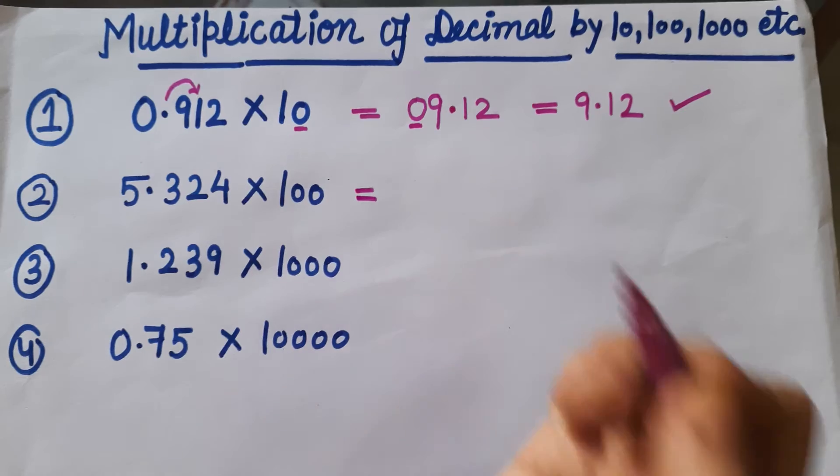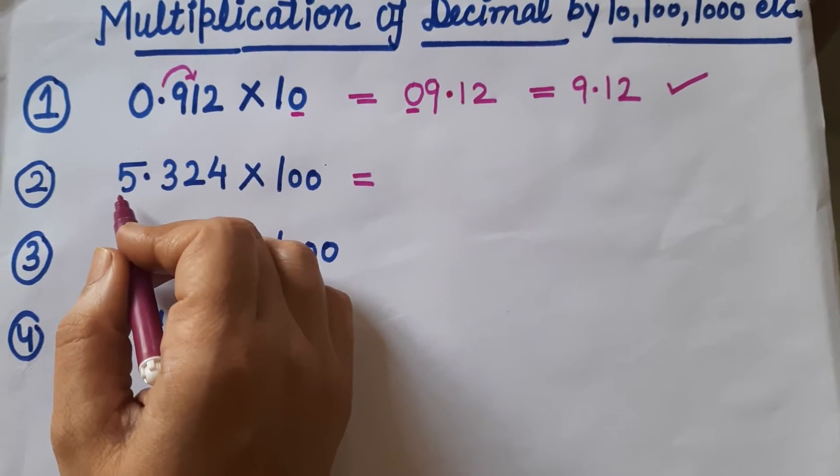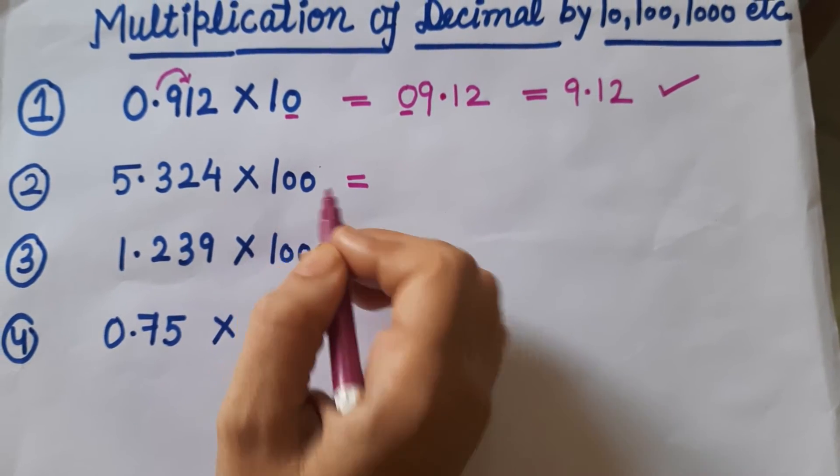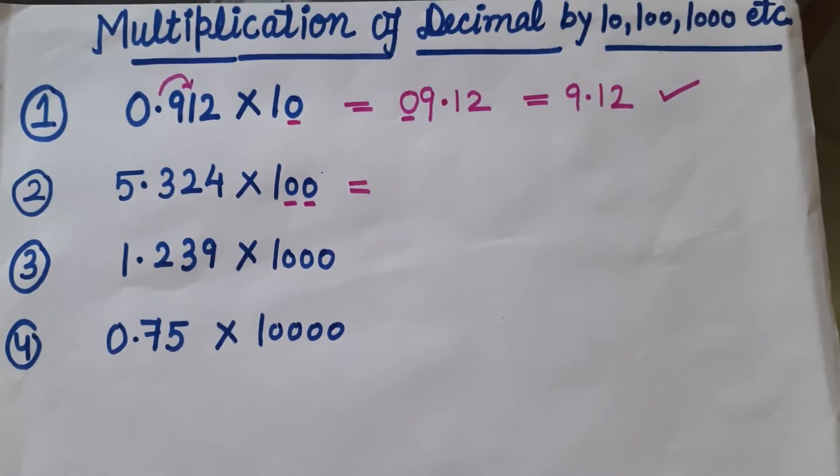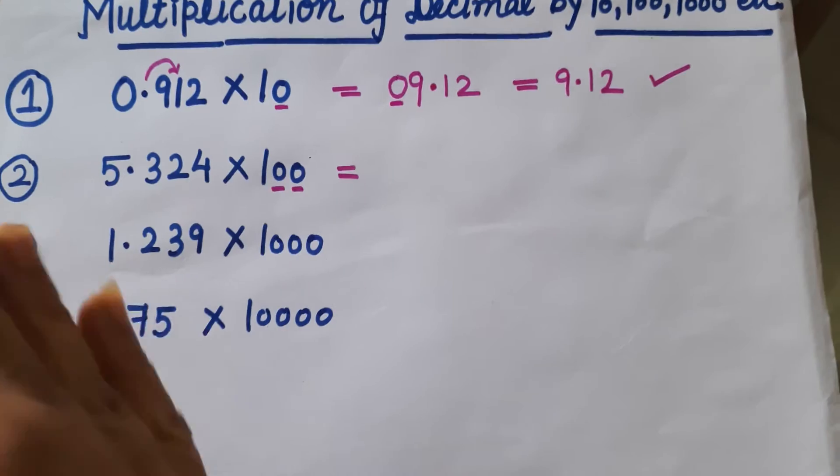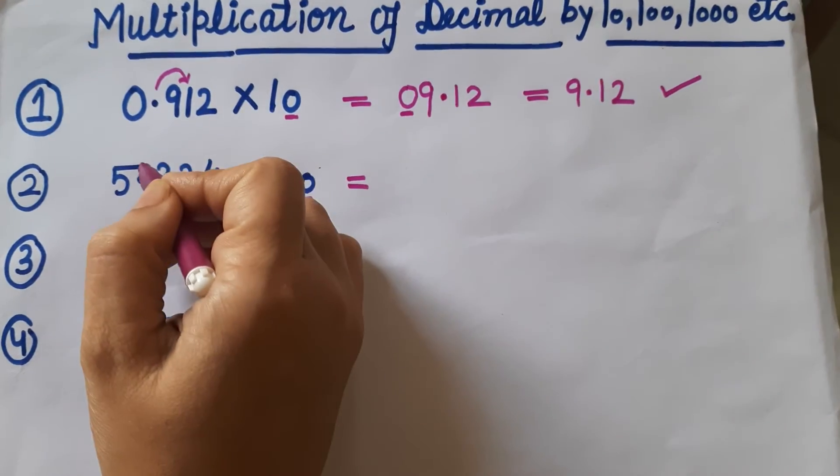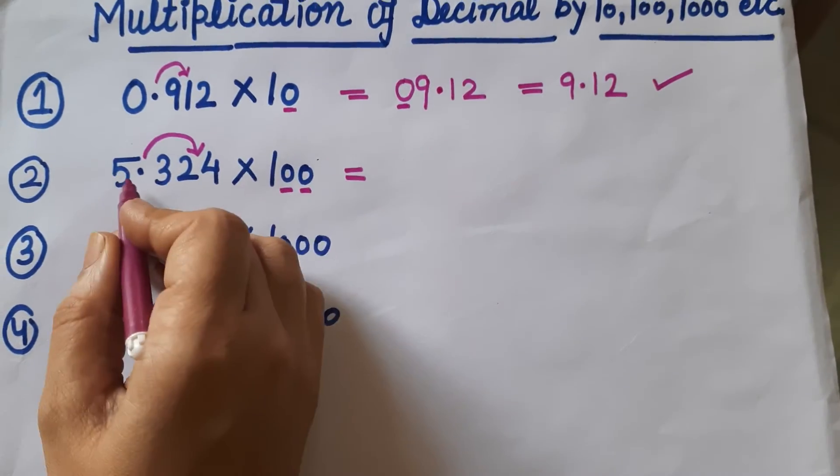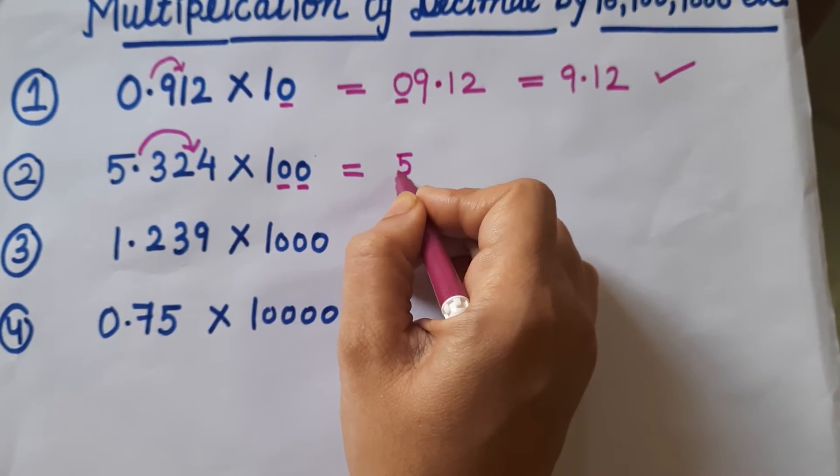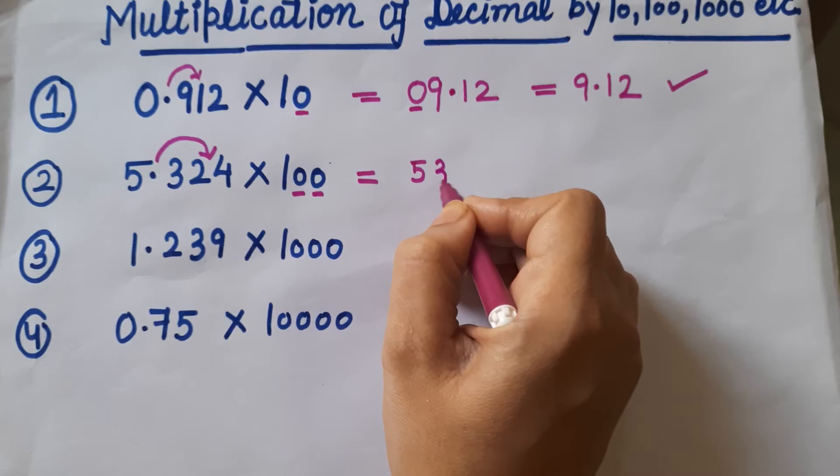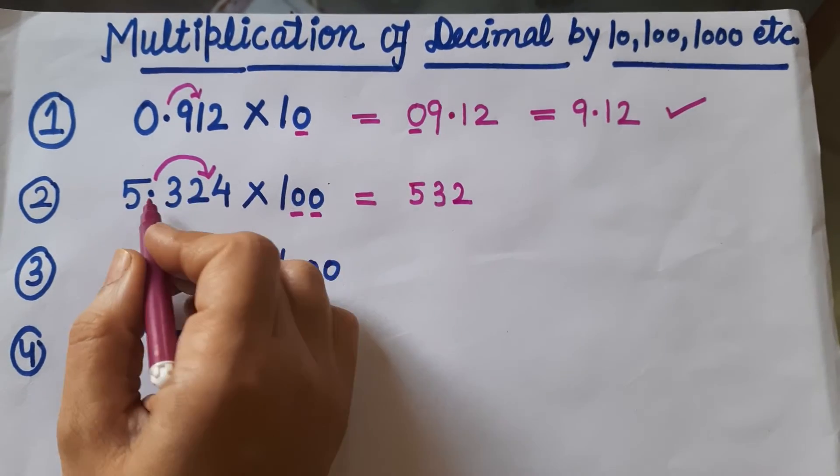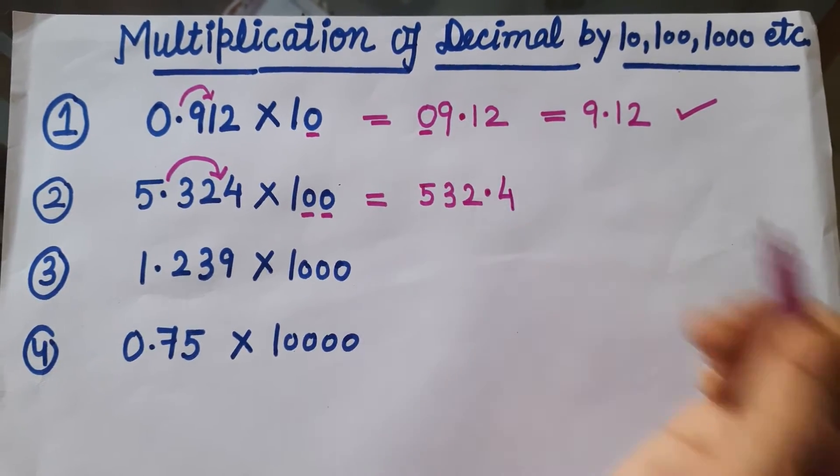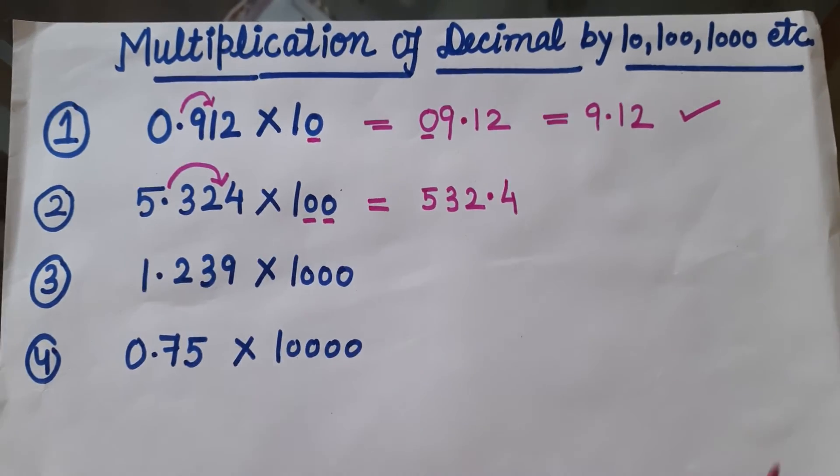Let's see the second example. Here the digits are 5.324 which is multiplied by 100. So here are 2 zeros, so our decimal will shift to the right side 2 digits. The decimal will be shifted after 2 digits. So we write 5, 3, 2, now the decimal shifts, then we put decimal then 4. This is the answer, 532.4.